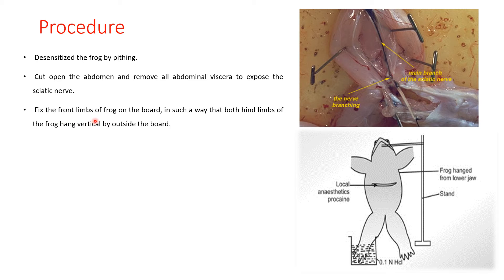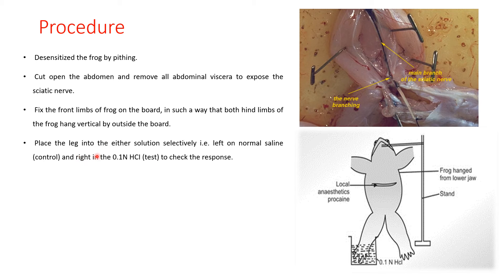Then fix the front limb of the frog on the board in such a way that both the limbs behind the frog hang vertically outside of the board. Place each leg into either solution selectively — the left leg into normal saline as control, and the right leg into 0.1 normal HCl as the test, to check the response.